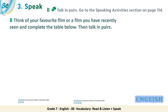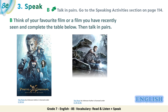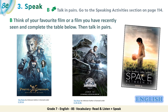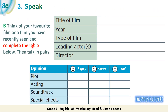Let's move to exercise B — talk in pairs. Go to the speaking activities section on page 114. Think of your favorite film or a film you have recently seen and complete the table below, then talk in pairs. Let's take three examples: The Pirates of the Caribbean, Jurassic World, and The Space Between Us.